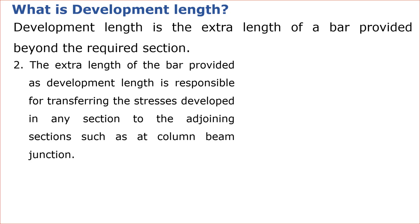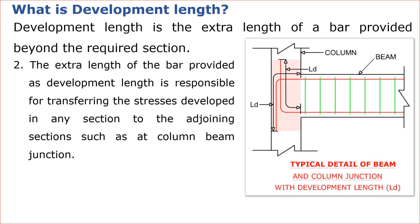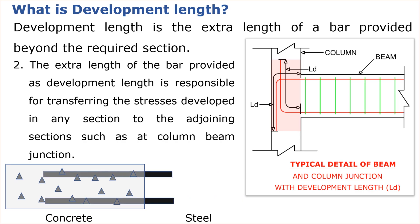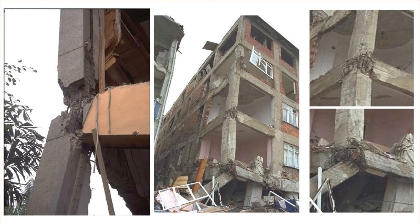The second point: the extra length of the bar provided as development length is responsible for transferring the stresses developed in any section to the adjoining sections, such as at column-beam junctions. In this diagram you can see that the bar from the beam is bent at the column junction so that the steel bar and concrete bond gets even stronger. Provision of appropriate development length is an important aspect of safe construction practice. Proper development length in reinforced bar shall be provided as per the steel grade considered in design; otherwise, where less development length is provided than required, structures will be prone to failure due to slippage of joints, bonds, anchors, and laps. In such cases the bar will not yield first, but failure will happen at joints and laps prior to yield of reinforcement bars.